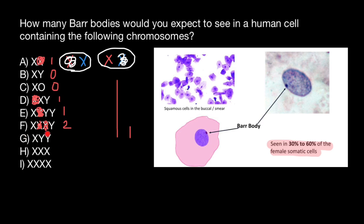The next variant is going to be a male because a Y chromosome is present, and there is one X chromosome. So we are going to see zero Barr bodies here.